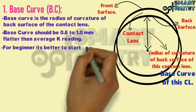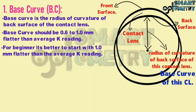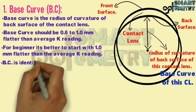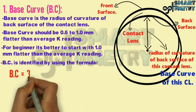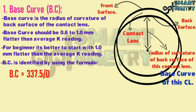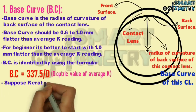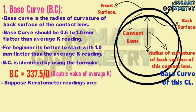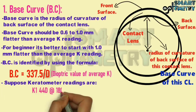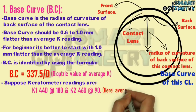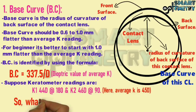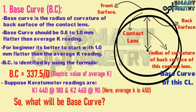For beginners, it is better to start with 1 mm flatter than the average K reading. Base curve is identified using the formula: base curve equals 337.5 divided by D, where D is the dioptric value of average K. For example, suppose keratometer readings are K1 = 44 diopters at 180° and K2 = 46 diopters at 90°, giving an average K of 45 diopters. Let's solve for the base curve.